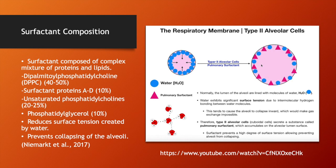So what does surfactant do? Surfactant interdisperses between the water molecules in the alveolus and reduces the surface tension created by the water. In doing so, it prevents the alveoli from collapsing in on themselves.